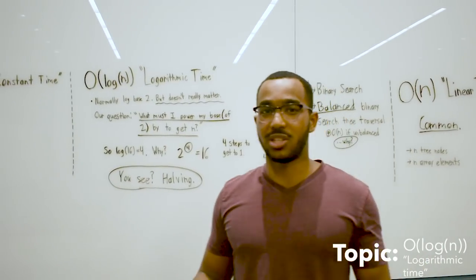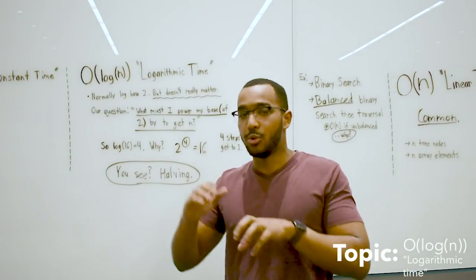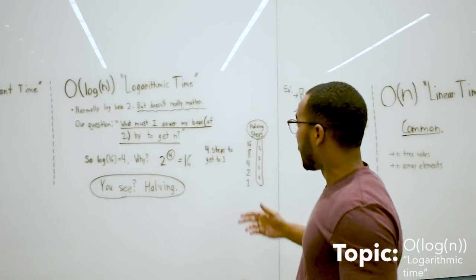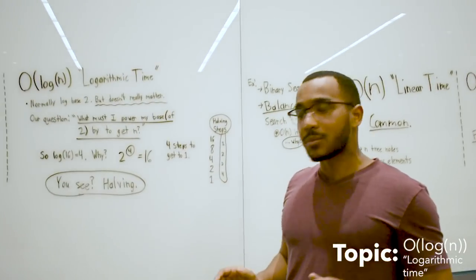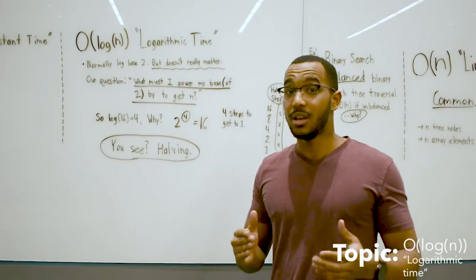For example, log 16. How do we get 16 from 2? What do we need to power 2 by to get 16? We need to do 2 to the 4th. 2 to the 4th is 16. So what does that mean?